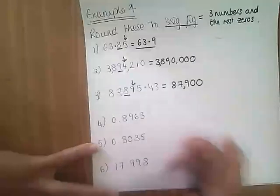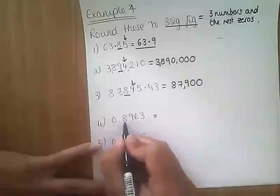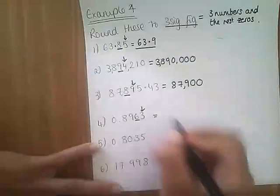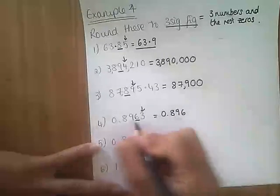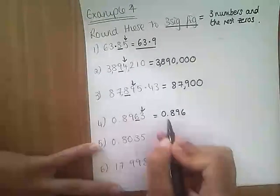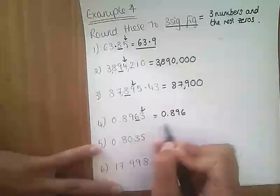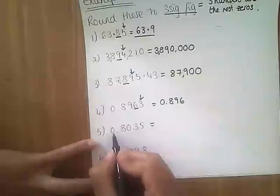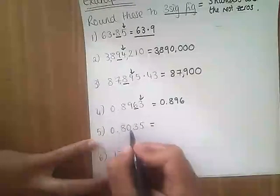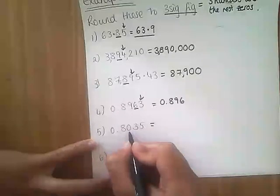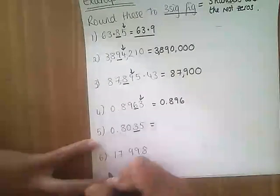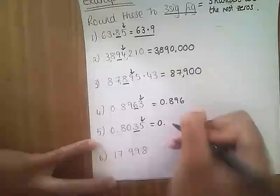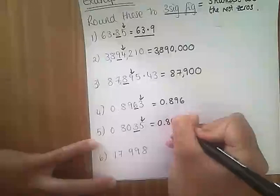Number four: that zero doesn't count as a significant figure, so our first, second, third significant figure — is the number next door five or more? No — so it stays as eight, nine, six. That stays as a six. You need the nought point in front so that it keeps the same value. Number five, our third significant figure: that zero doesn't count as a significant figure, so this is one. This does count because it's after another number — two, three. Is the number next door five or more? Yes — so it goes 0.804.